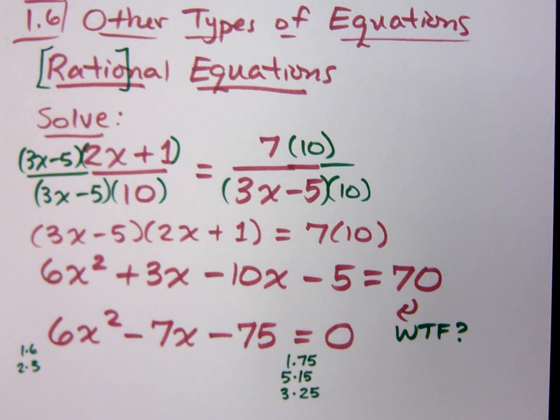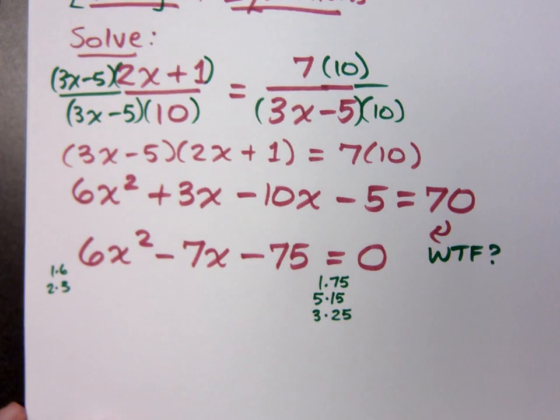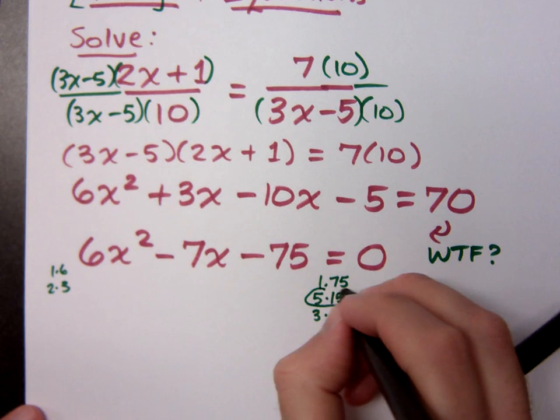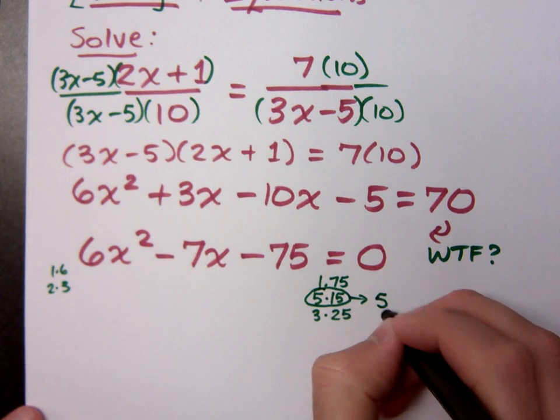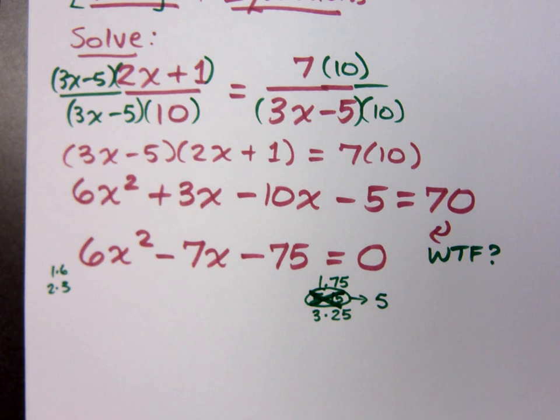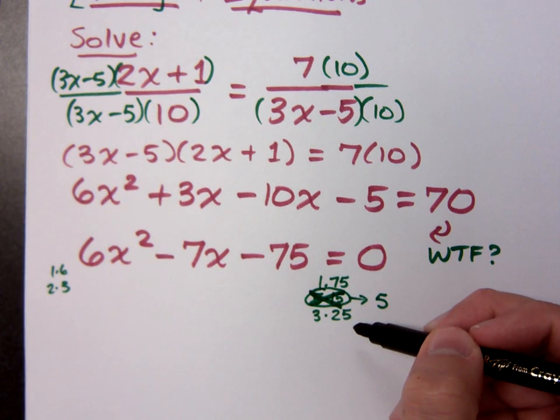Now think about the tricks that I've taught you with factoring. What about 5 and 15? They are out. Why are they out? They have a common factor of 5 that does not go into 7. So what is your heart telling you? Should you use the 1 and 75 or the 3 and 25? 3 and 25.